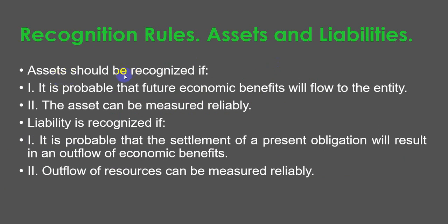Assets should be recognized if it is probable that future economic benefits will flow to the entity, and the asset can be measured reliably. A liability is recognized if it is probable that the settlement of a present obligation will result in an outflow of economic benefits, and that outflow of resources can be measured reliably.